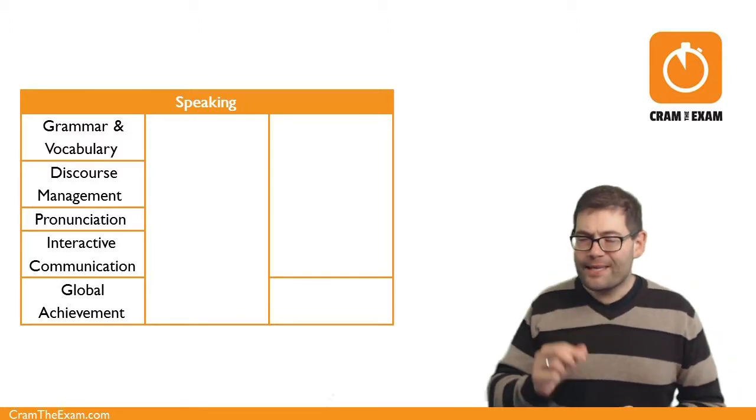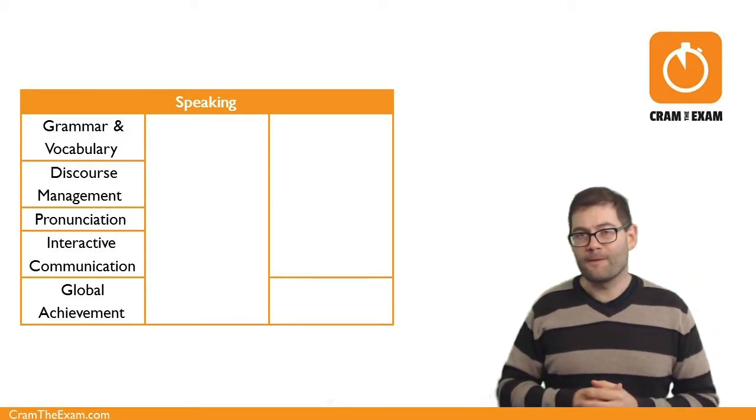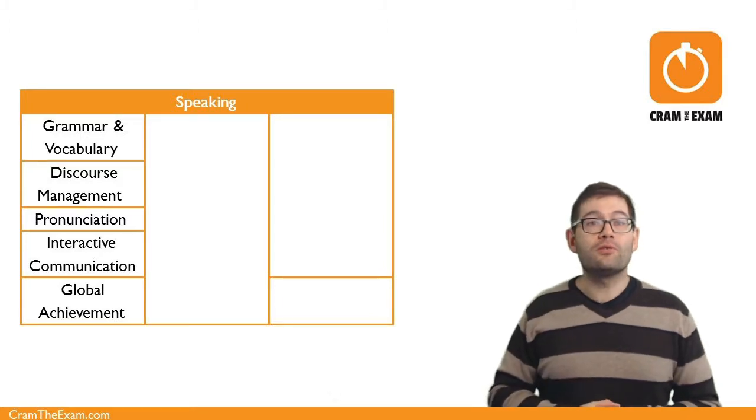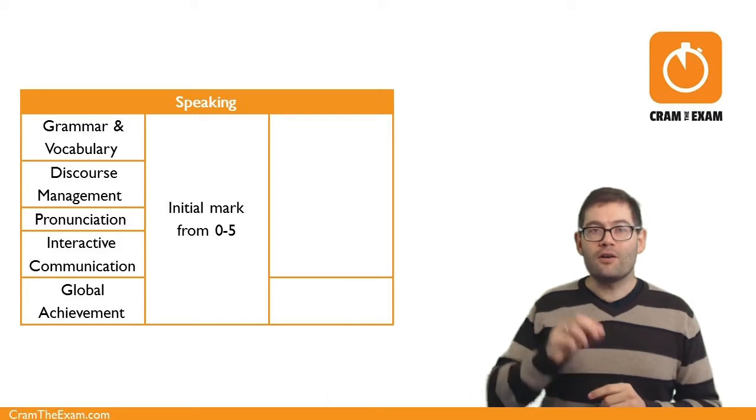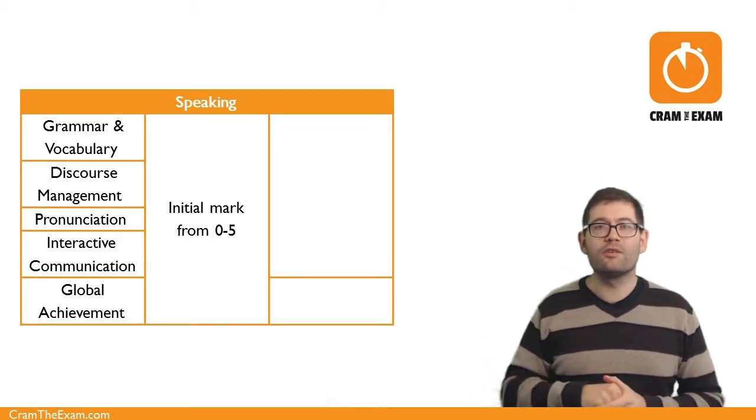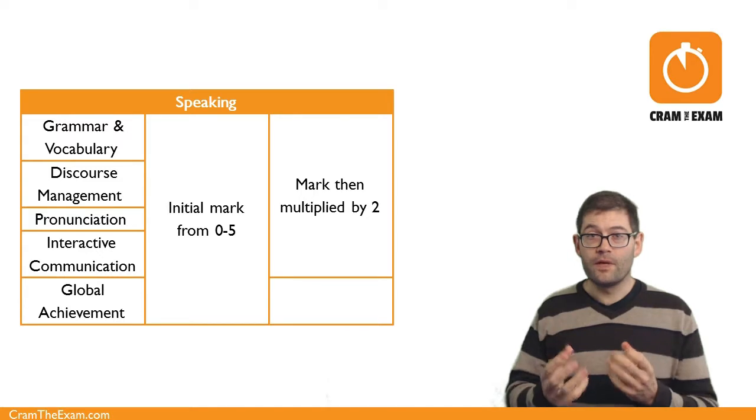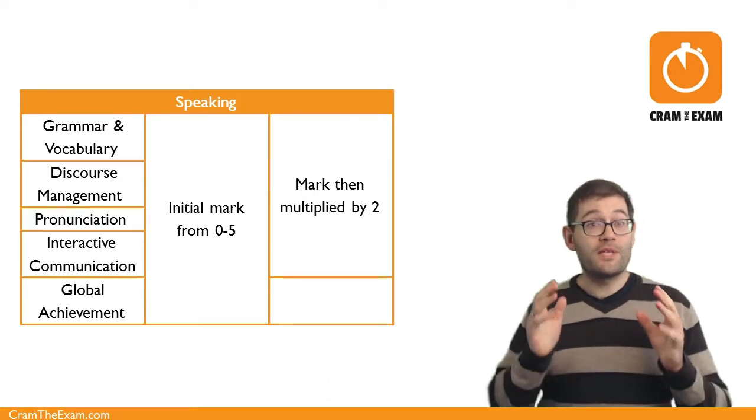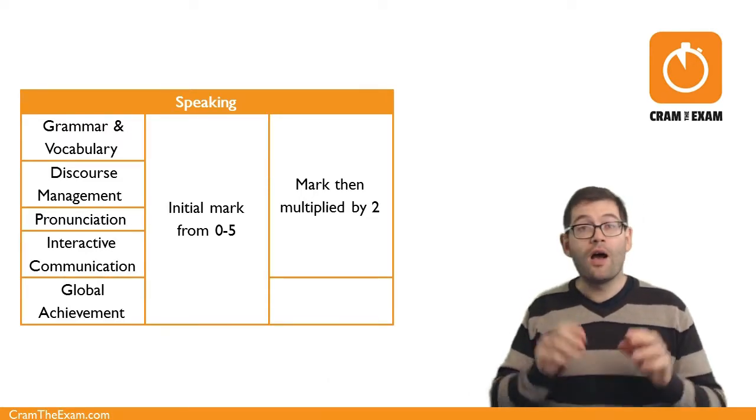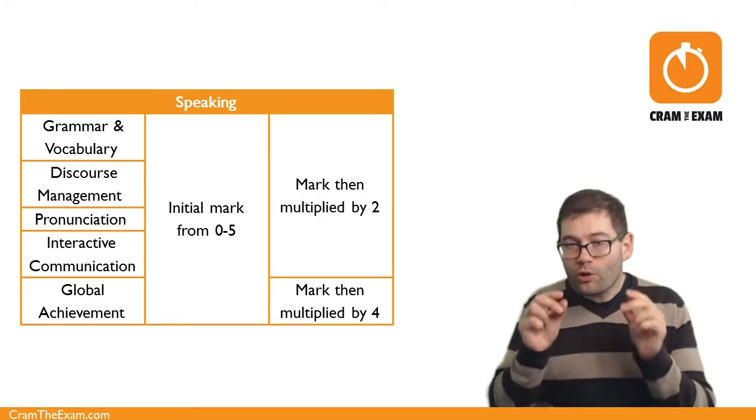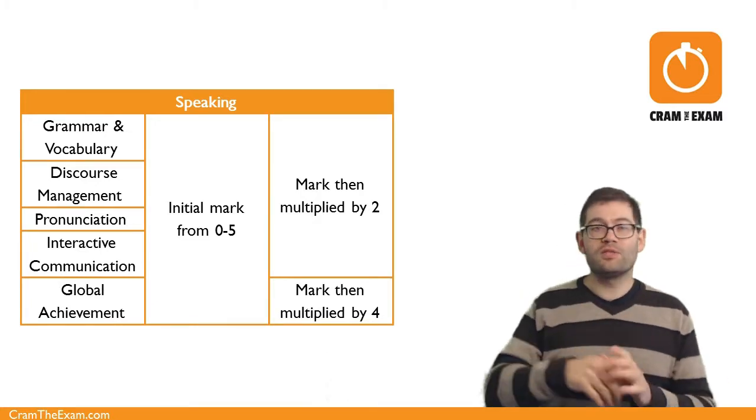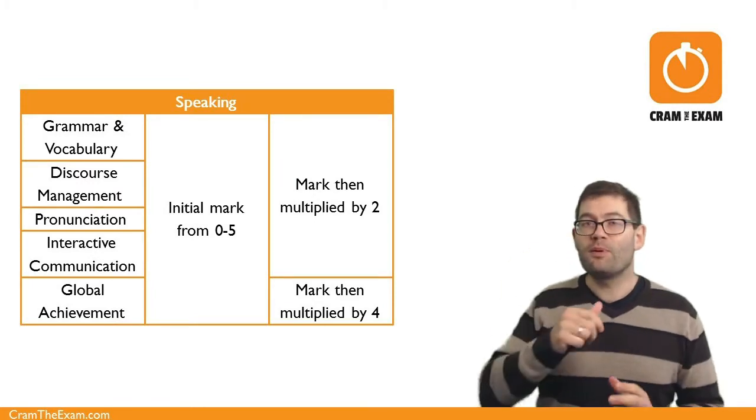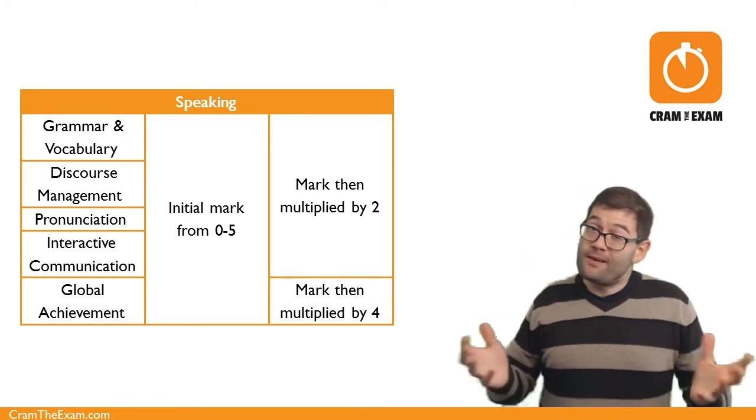OK, now here's the frightening bit, the scoring. As mentioned, you're scored out of five for each section, but the marks you get from the examiner in the corner over there are doubled. The score you get from the chatty examiner in front of you are quadrupled. Quadrupled, that's times four. Multiplying results if you do well is fantastic. Multiplying them if you do badly, well, that sucks.